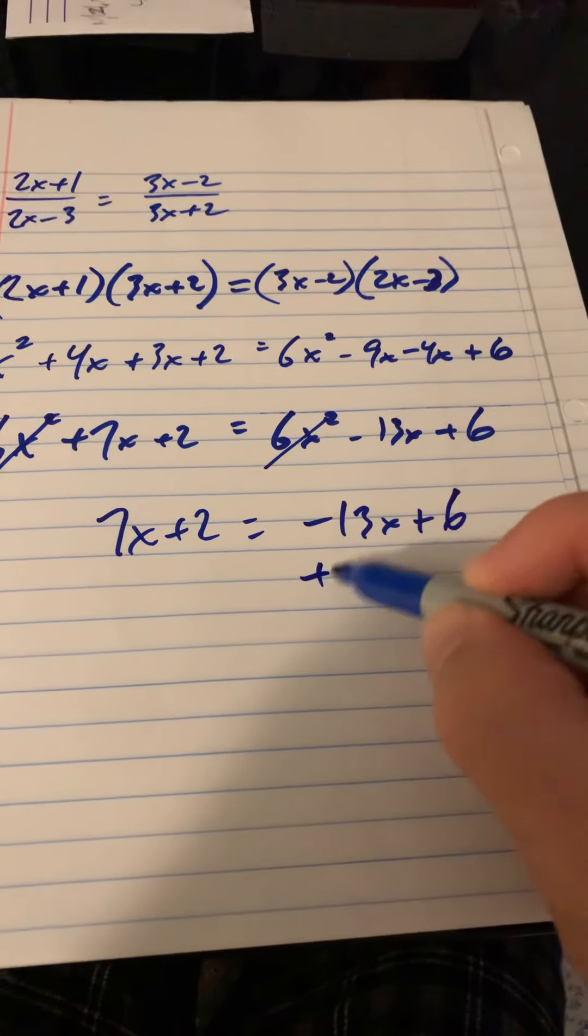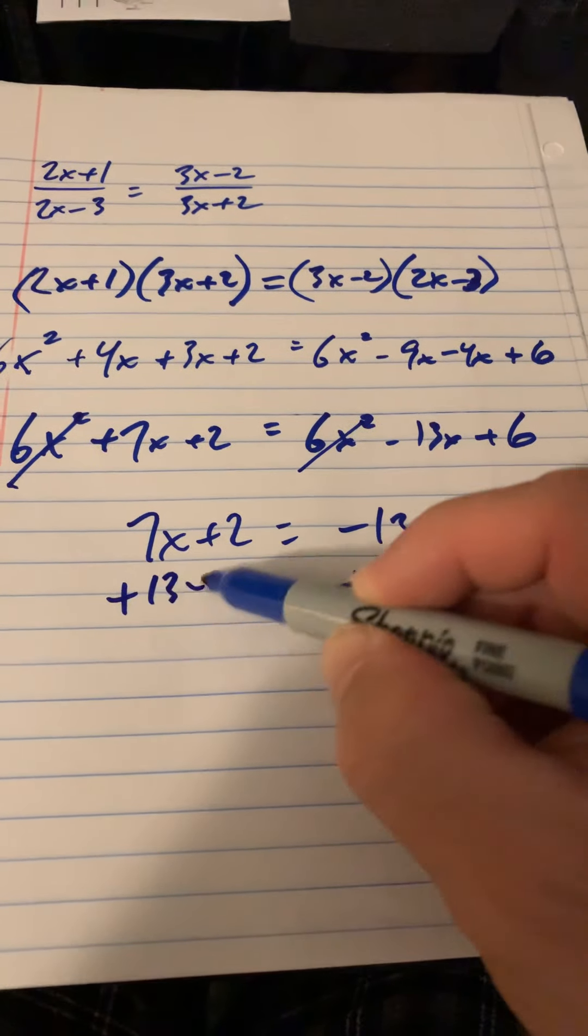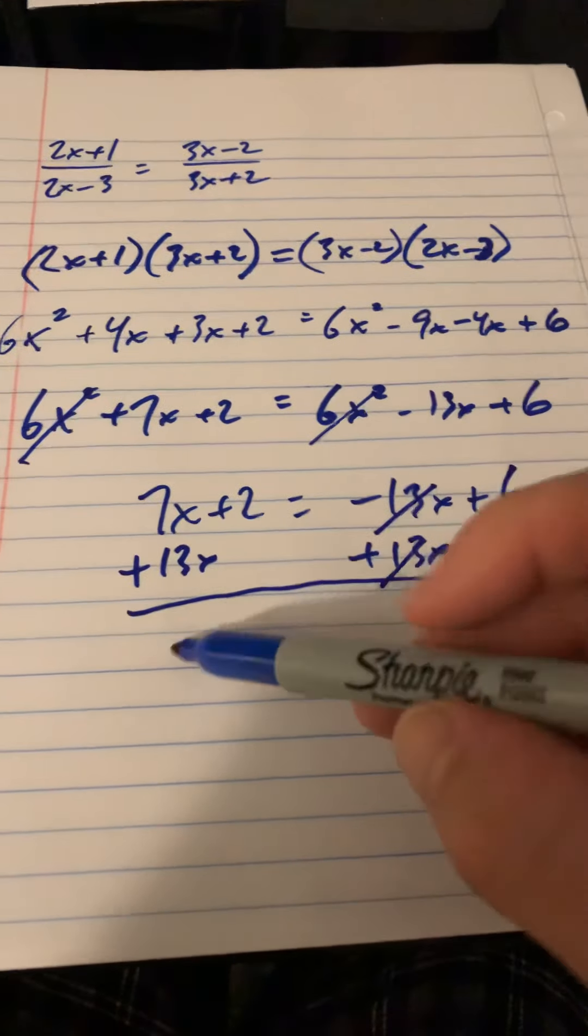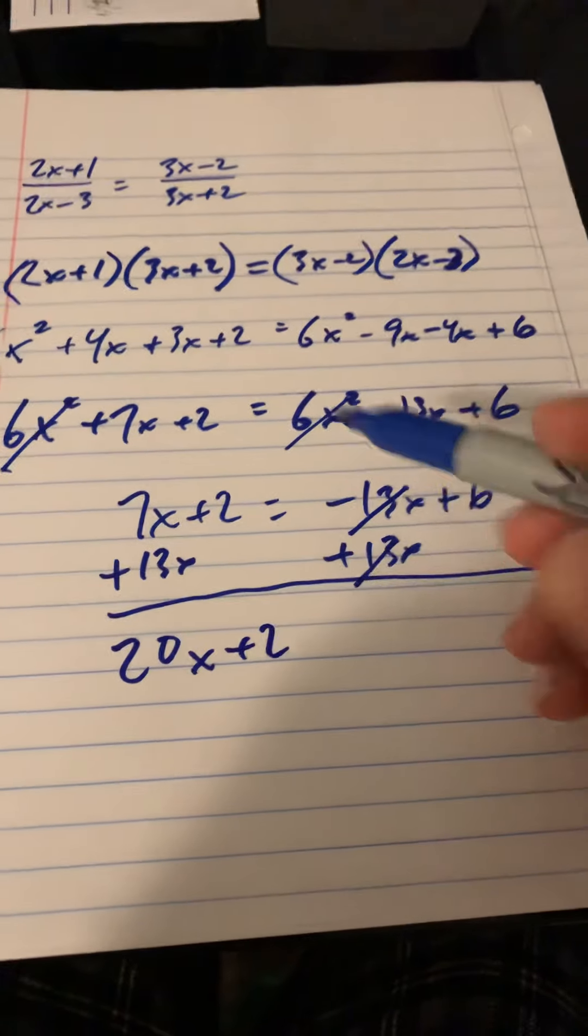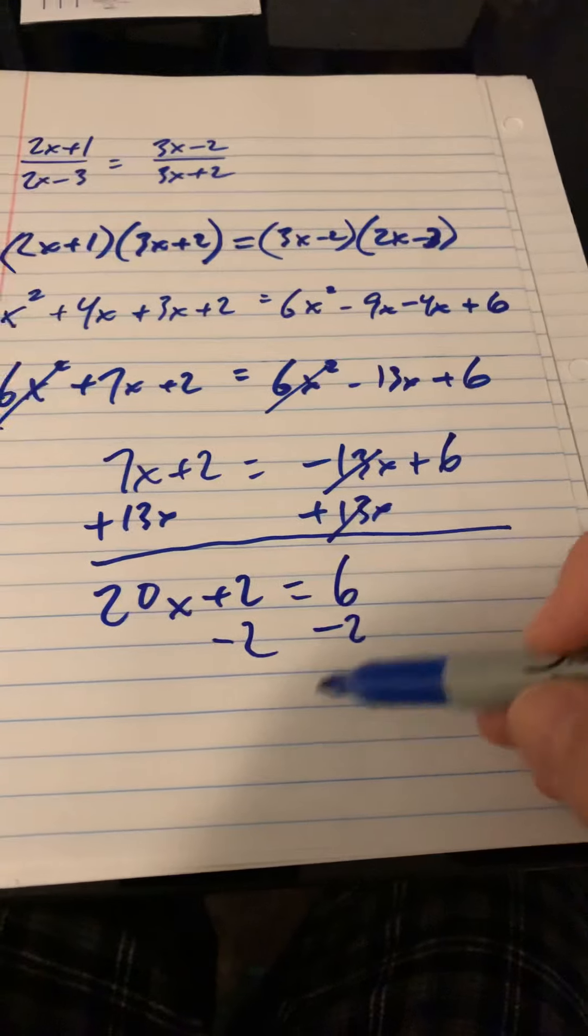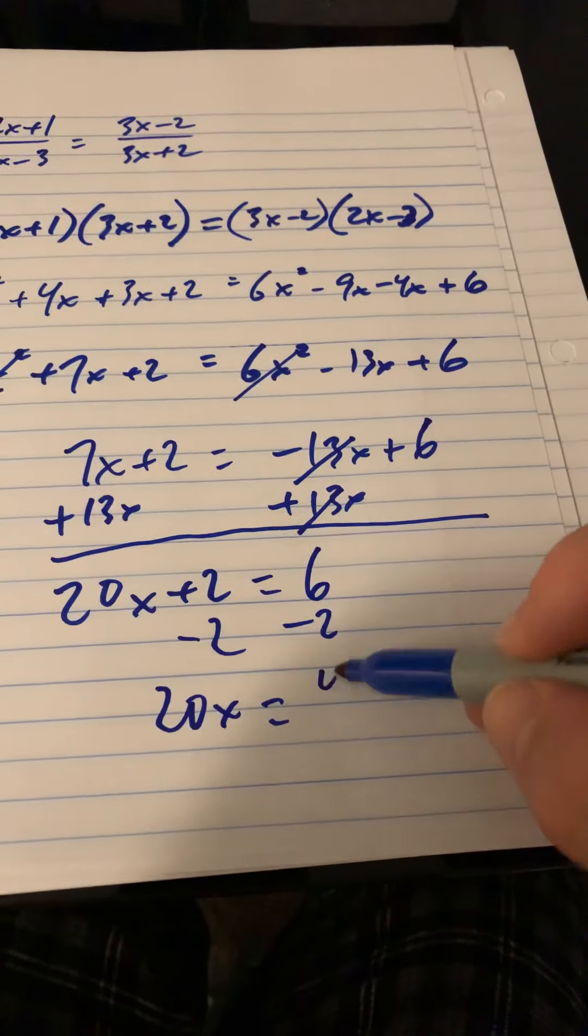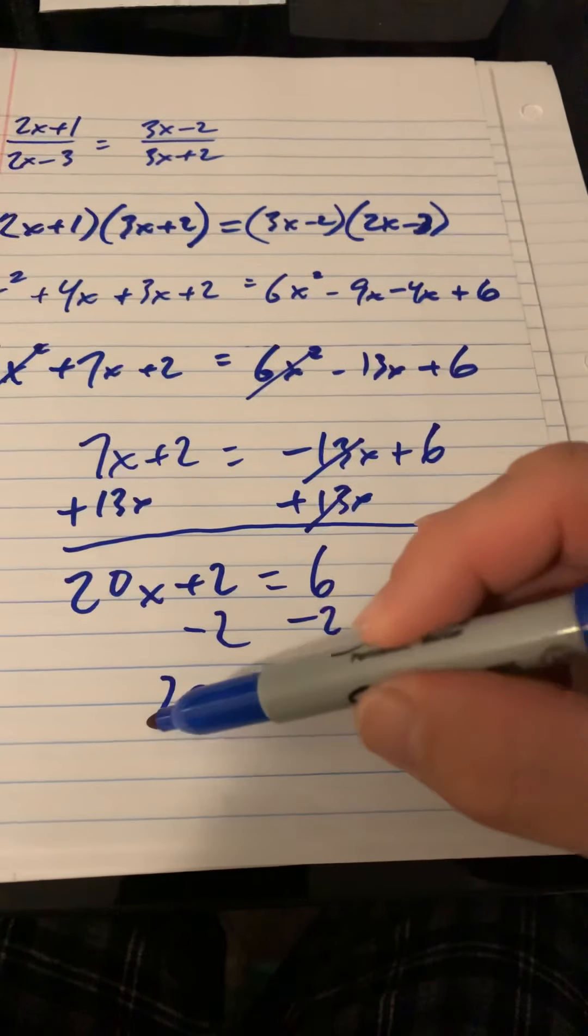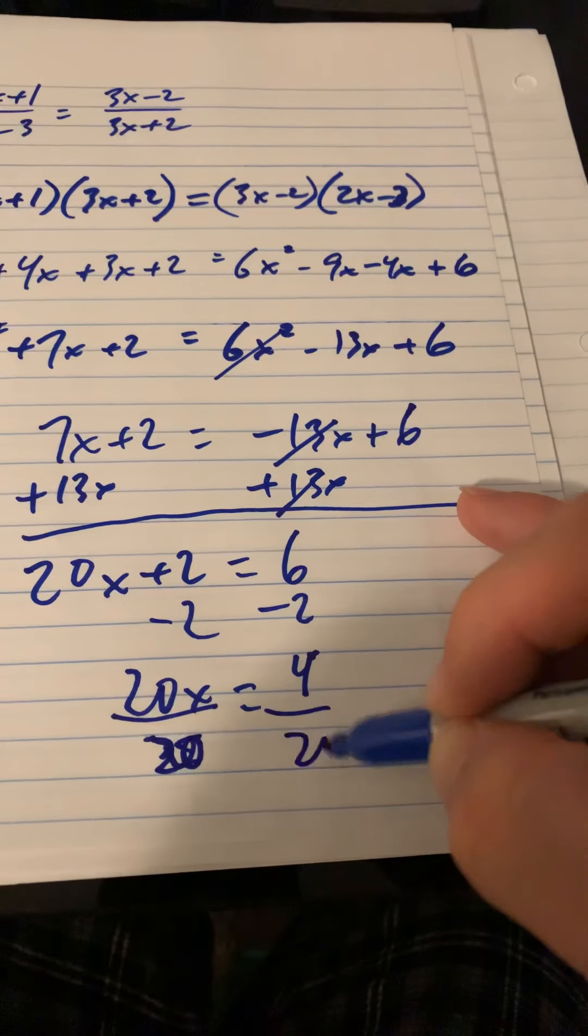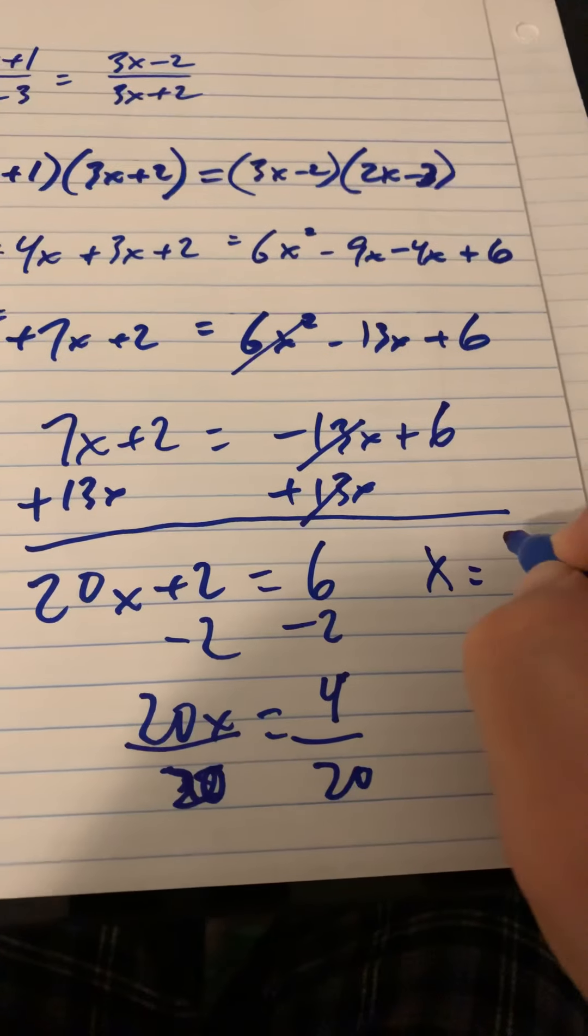So I'm going to go ahead and bring my 13x over here. It leaves me with 20x plus 2 equals 6. Subtract 2. Leaves me with 20x equals 4. Divide both sides by 20. And we've got x equals 4 over 20 reduces down to 1 fifth.